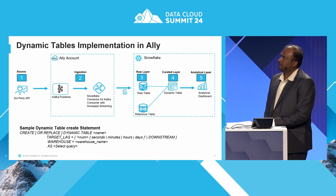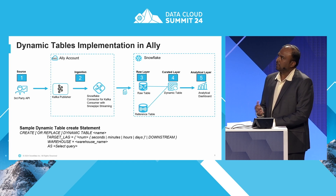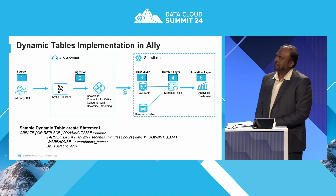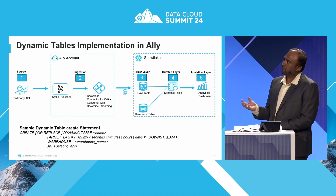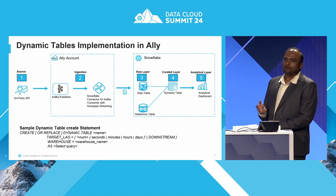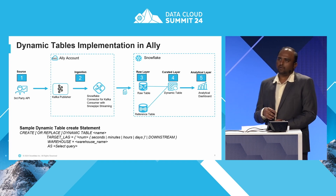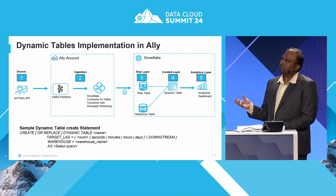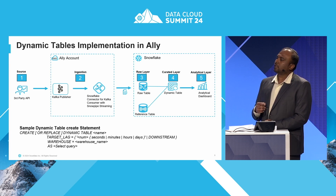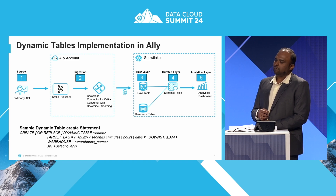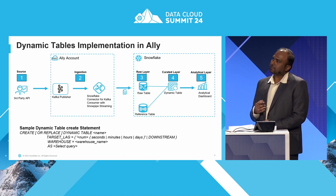This is how we implemented dynamic tables at Ally. The source — our third-party source — seamlessly ingests data to a Kafka publisher. In the ingestion layer, the Kafka publisher publishes data to multiple consumers. We initially implemented a Snowflake Sink Connector consumer, which by default used Snowpipe as the data load method. We then changed it to Snowpipe streaming — because Snowpipe is a two-step process: first ingesting to a staging area, then loading to the target table. Snowpipe streaming loads directly to the target table, reducing latency and cost. The raw layer is where we ingest all published events into a designated table in JSON format.